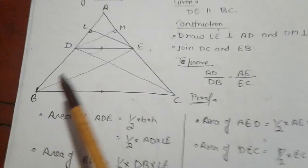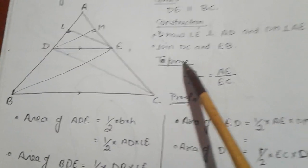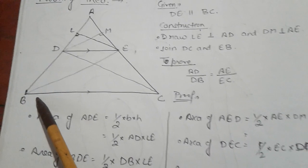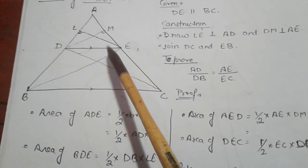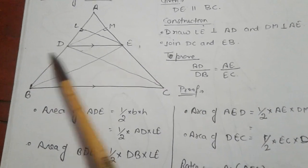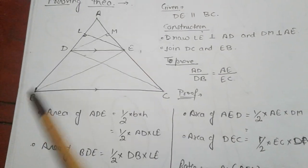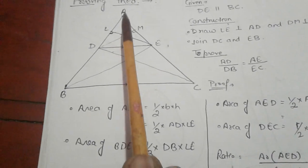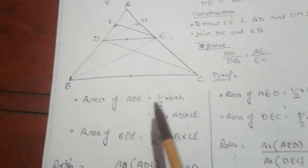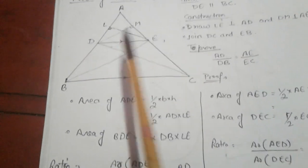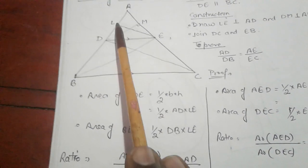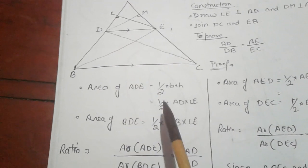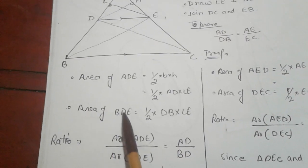We also have to join DC and BE. To prove: AD upon BD is equal to AE upon EC — meaning we have to prove that DE intersects AB and AC in the same proportion. Now let's see the proof. Area of triangle ADE equals half into base into height, which is half into AD into LE, where AD is the base and LE is the perpendicular.